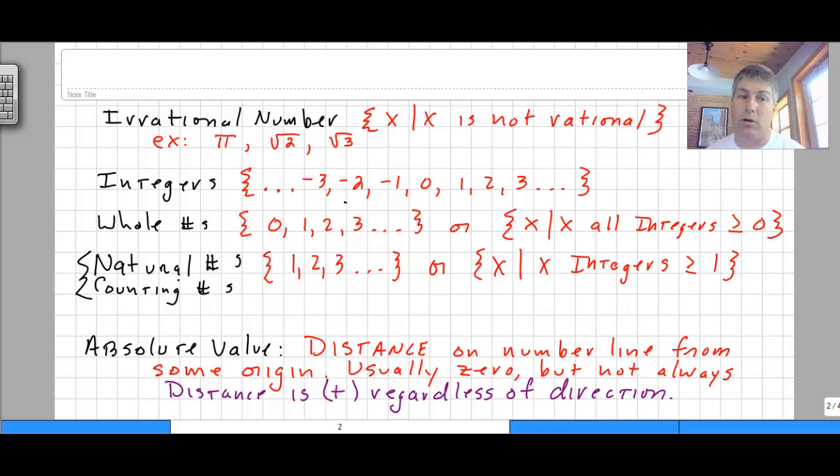And natural numbers, or counting numbers, they're referred to the same way, natural and counting numbers are the set of whole numbers without zero, or they're the set of integers that are greater than or equal to one. So a little vocabulary, make sure you're familiar with the difference between an integer and a whole number and a rational and an irrational number.